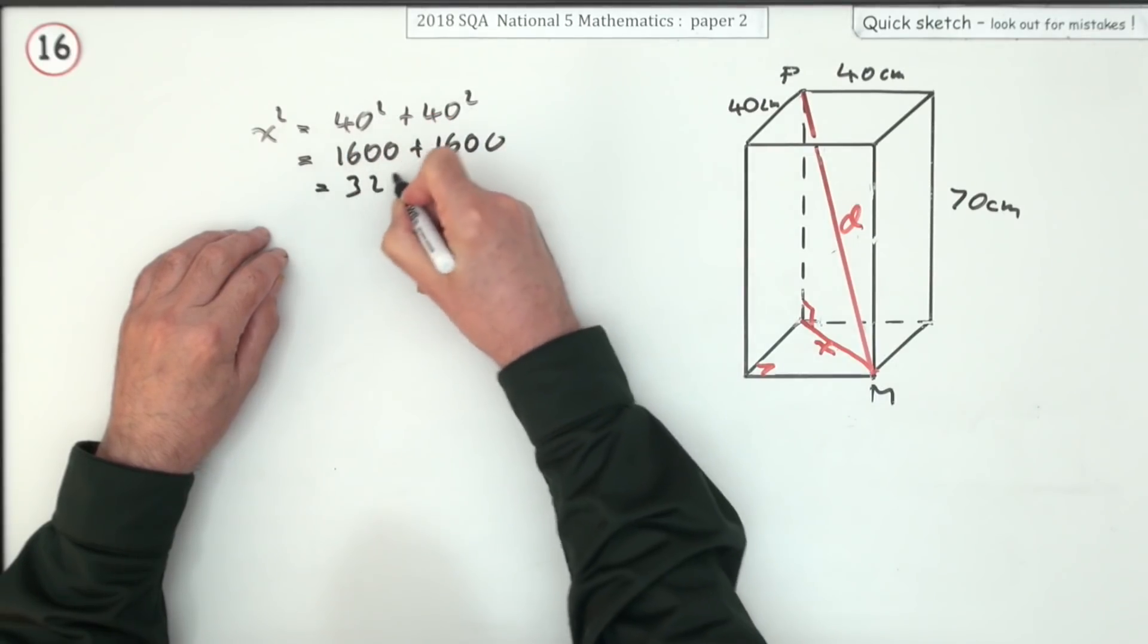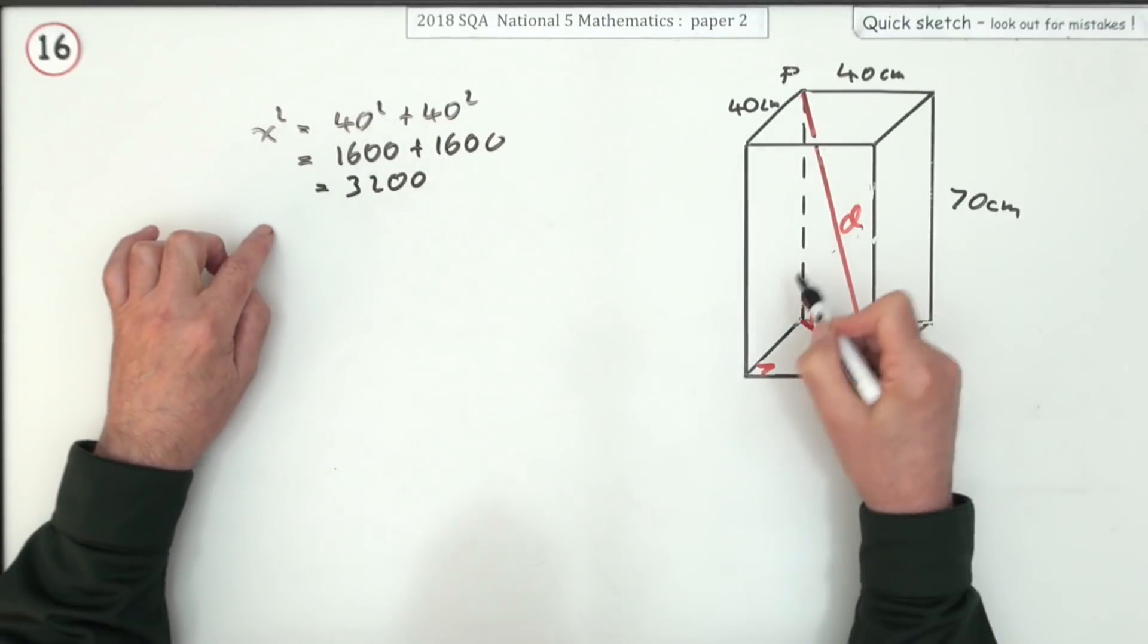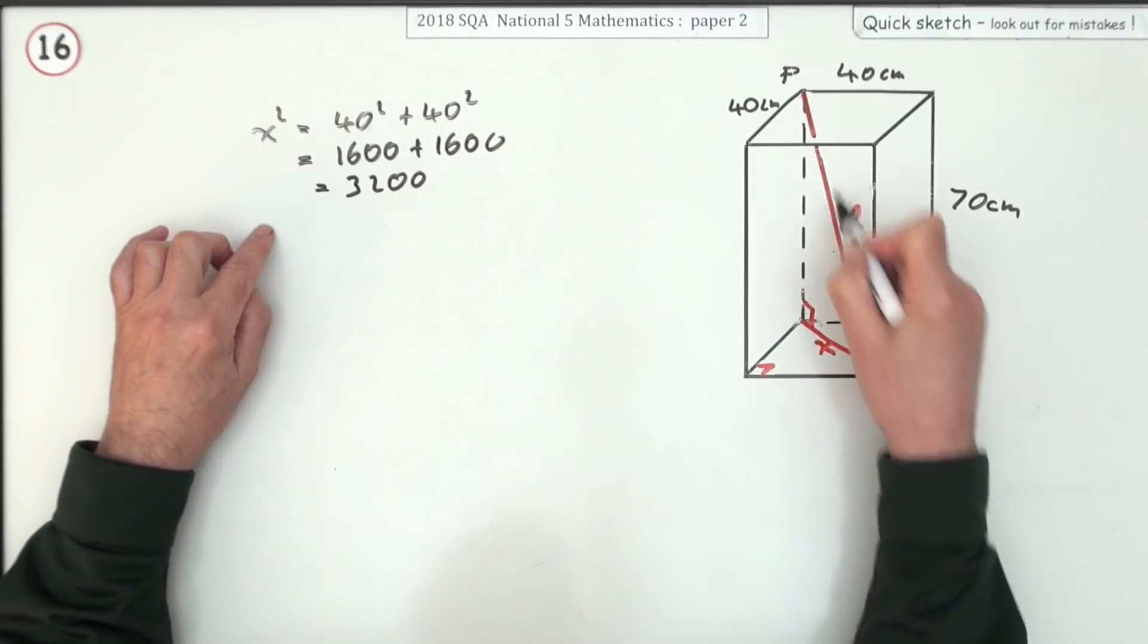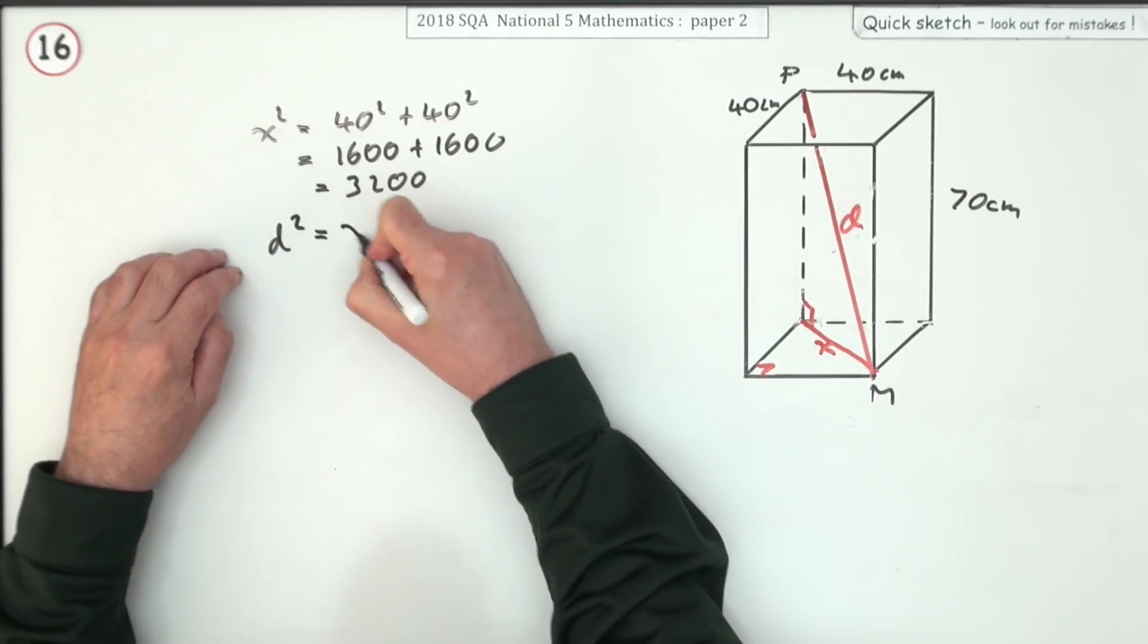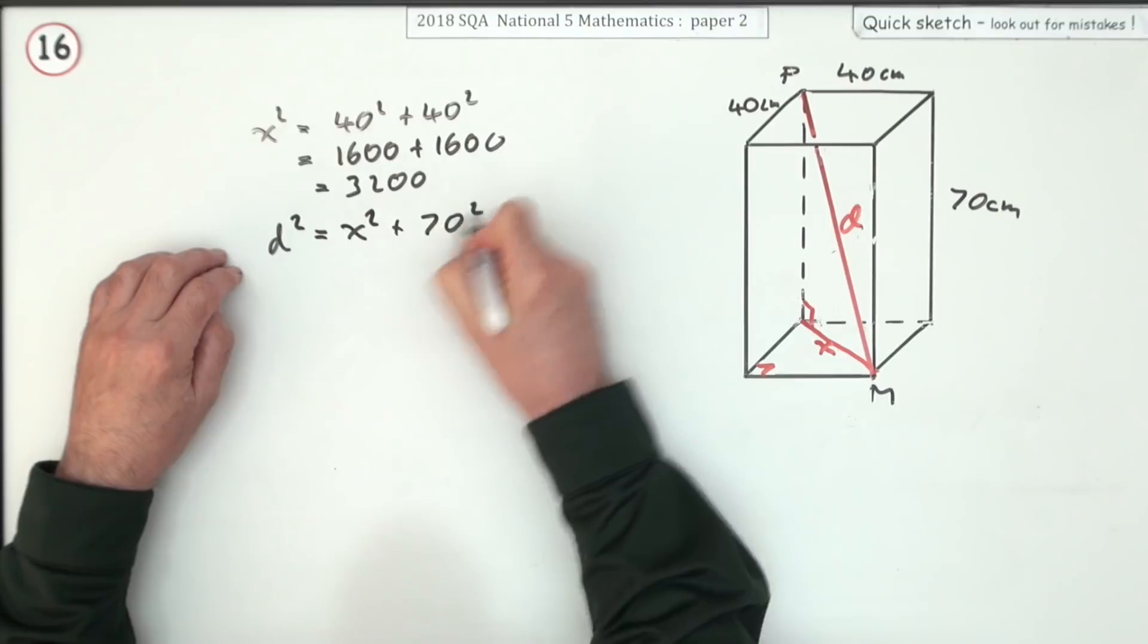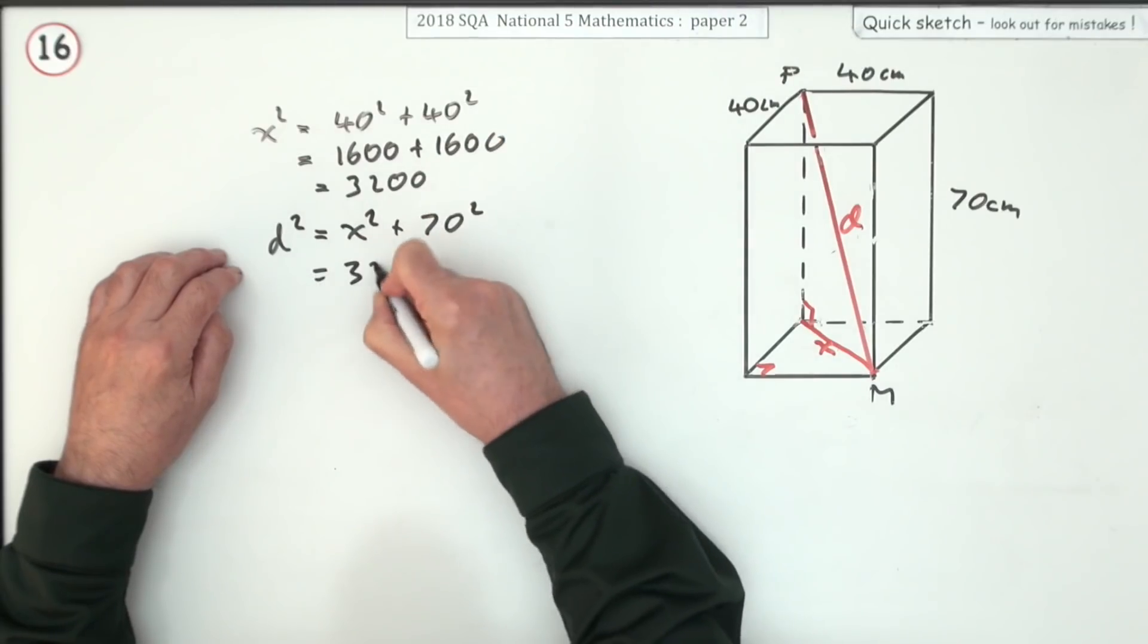But since I'm just going to pass that on to d in this triangle, I could just go on and say, well, d squared is x squared plus 70 squared, and pass that answer on to it.